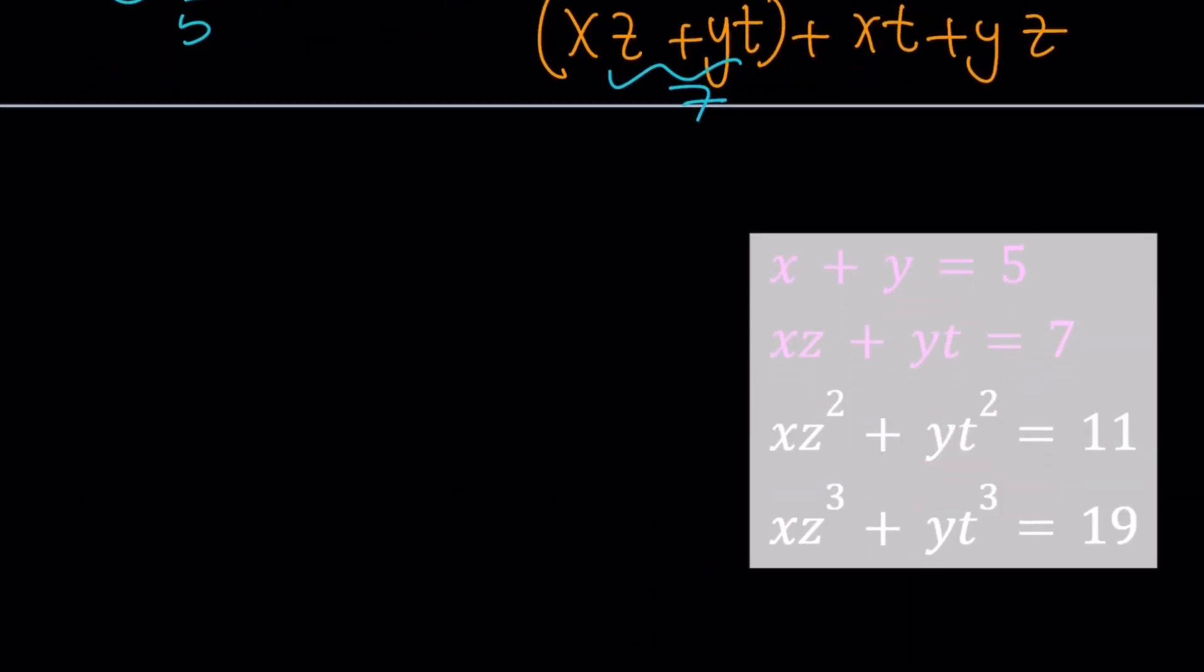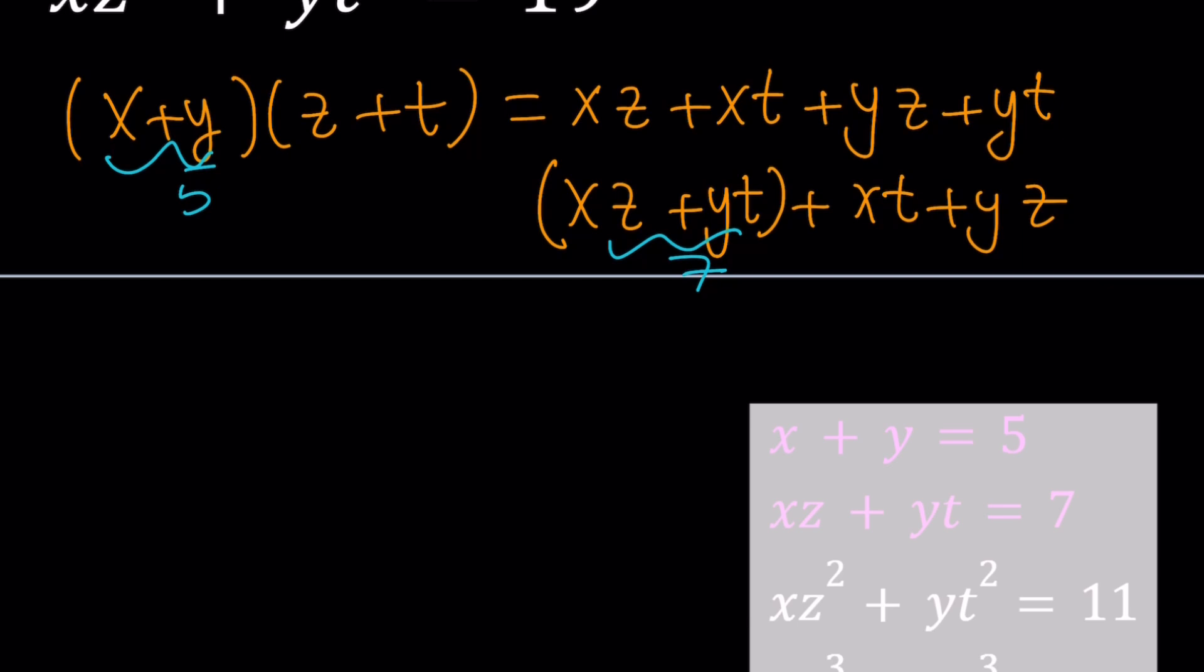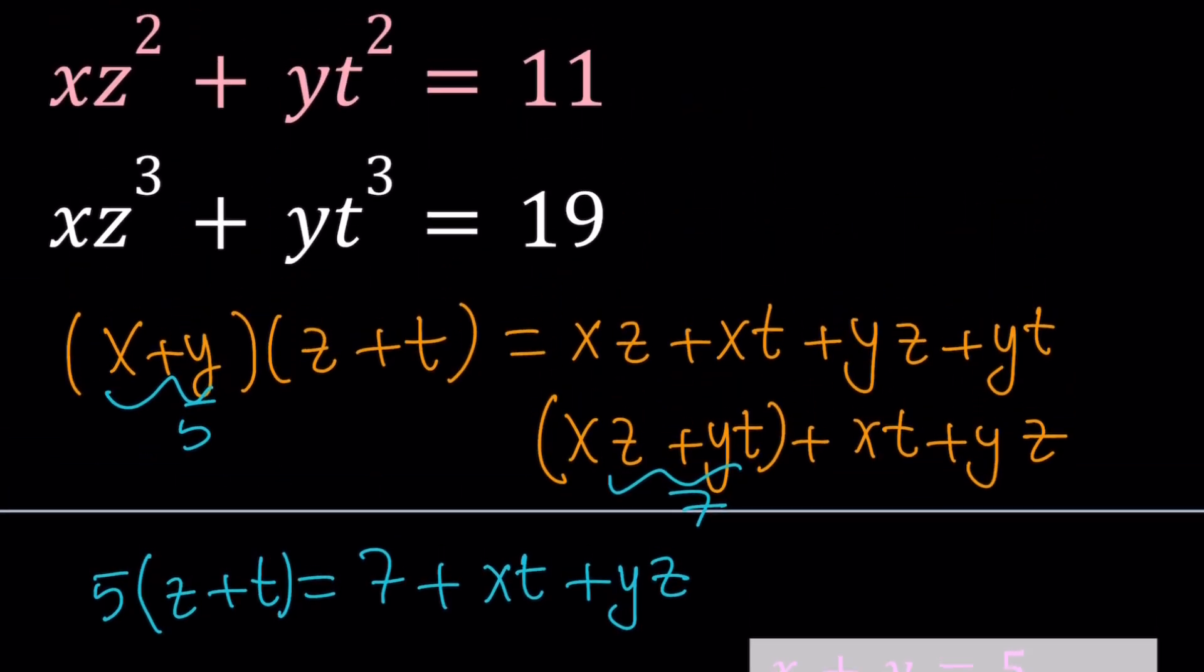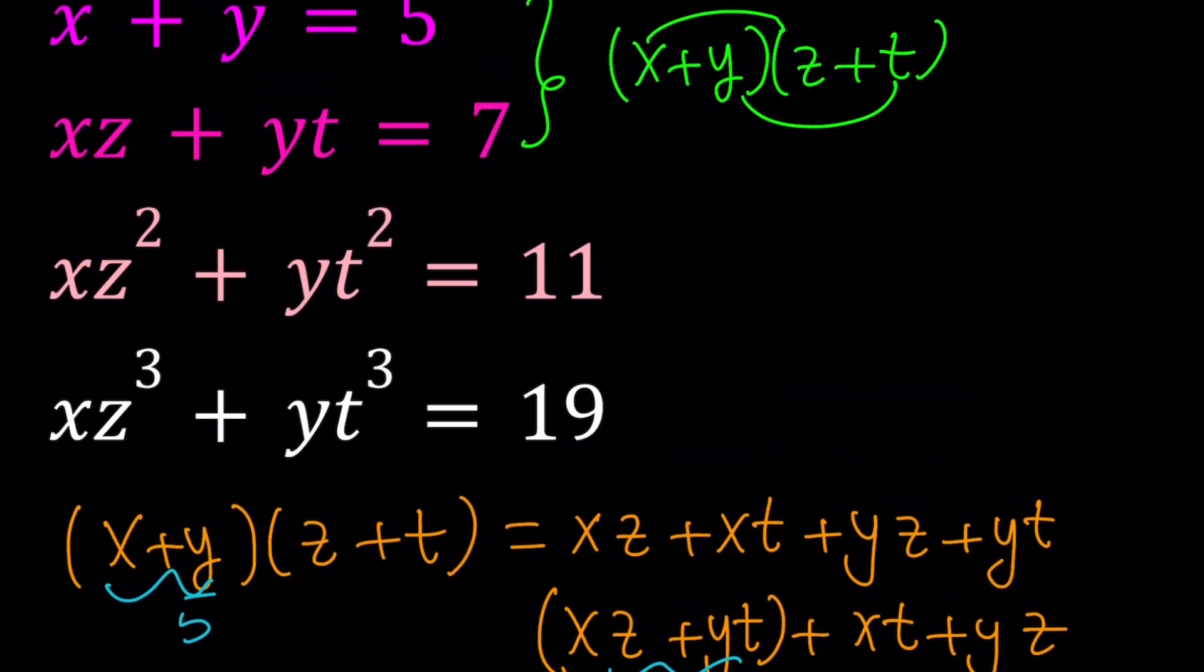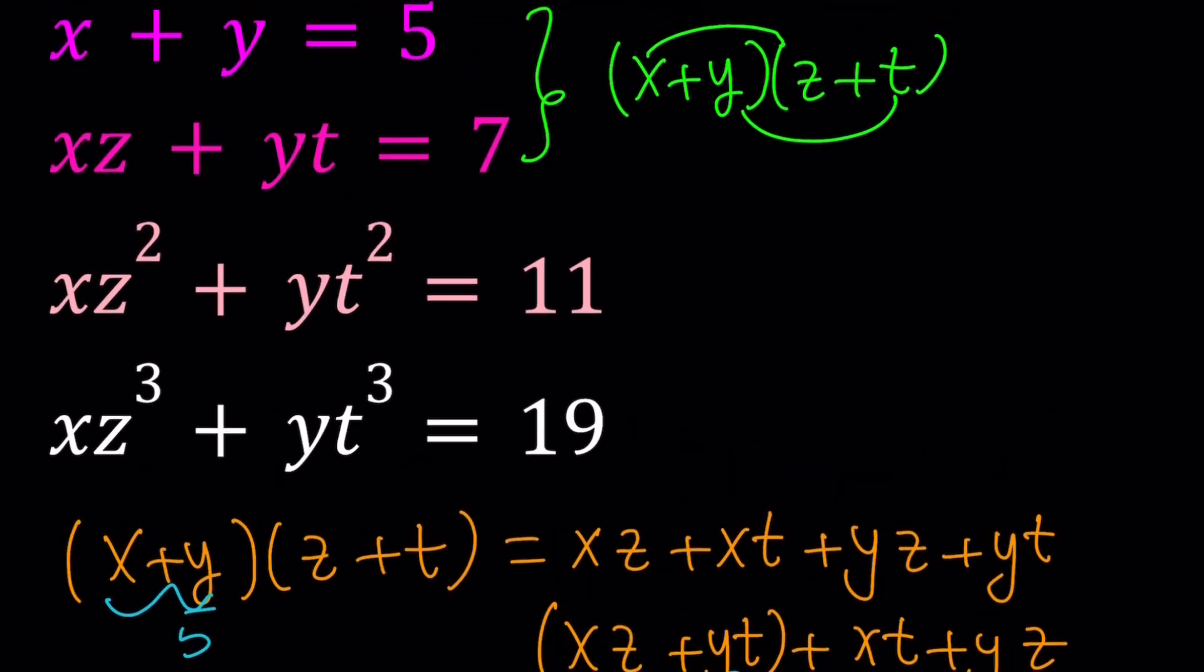So hopefully, this is something that I could use from now and especially for these kinds of equations. Anyway, so we get 5 times z plus t equals 7 plus xt plus yz. Now, is this helpful in any way? Not at this point, because we still have a lot of variables. We still have to go through lots of trouble to be able to solve this. But let's go ahead and see what we can do. The same exact strategy that we used to get xz plus yt from the first equation, we're going to use it on the third one, or the second one, actually, first, right? So how do you use it on the second one?